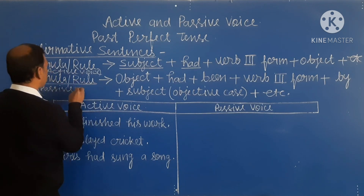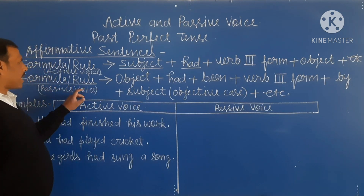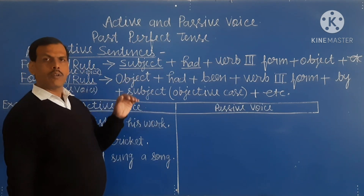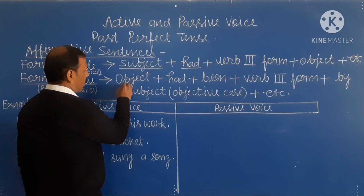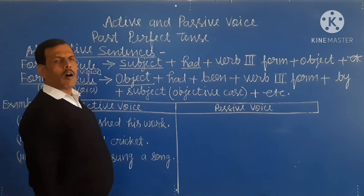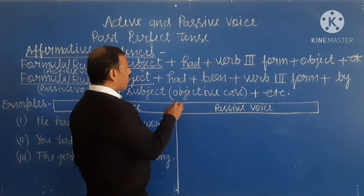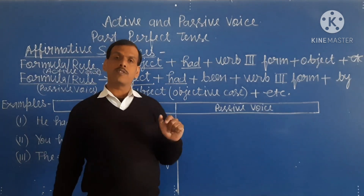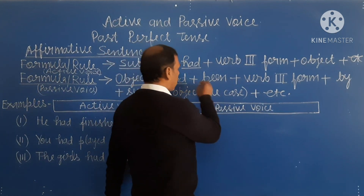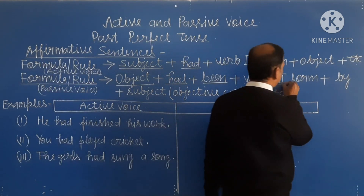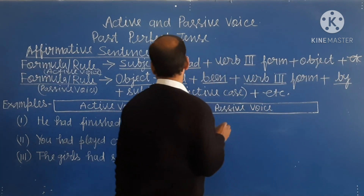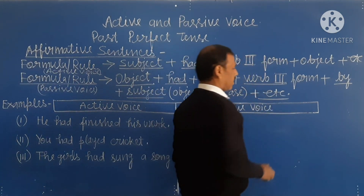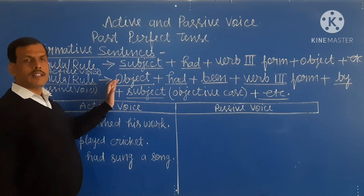This is the formula and rule of passive voice. In passive voice, first of all we write the object of the sentence. After the object, we write 'had', and it is clear that we use 'had' for both singular and plural objects. After 'had', we write 'been', then the third form of the verb, then 'by', then the subject in objective form.